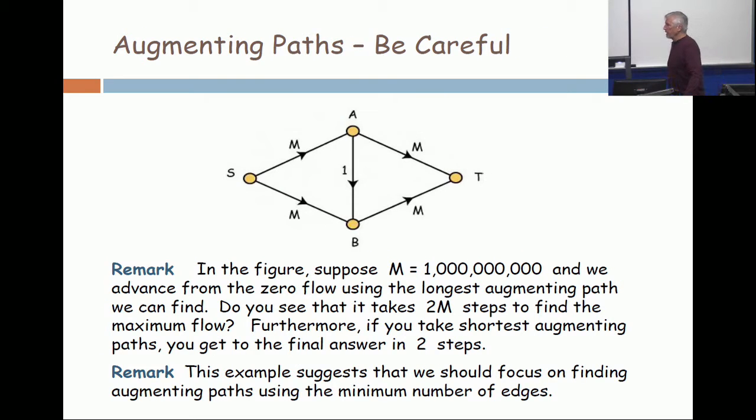Be a little careful. This example is classic. It's a very small network with only four vertices: a source, a sink, and two other vertices, A and B. All the edges that go left to right have huge capacity, some value M. M is enormous.